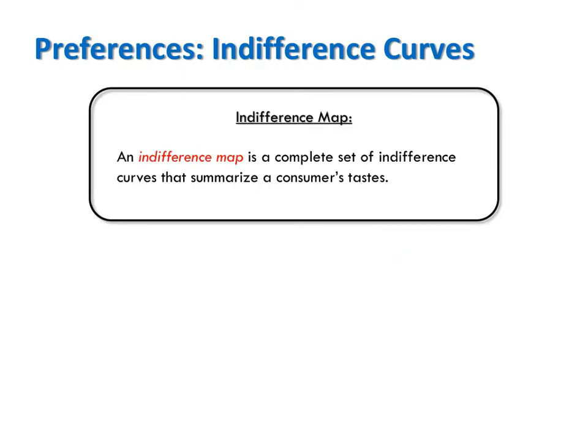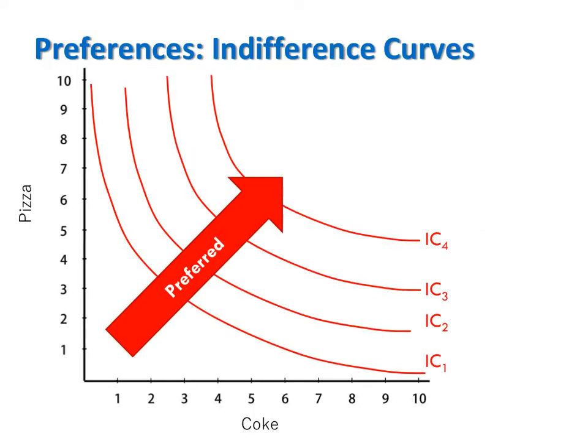One indifference curve represents all the bundles that give a consumer one level of happiness. An indifference map is the complete set of indifference curves that summarize an individual's tastes — typically at least three curves. For example, here is an indifference map of four indifference curves, summarizing four different levels of happiness and all the different combinations of coke and pizza that could attain each of those four levels of happiness.